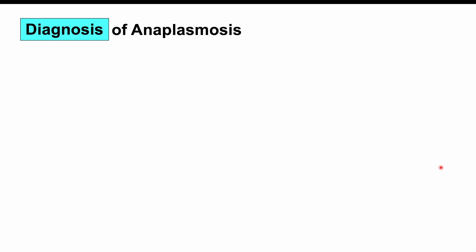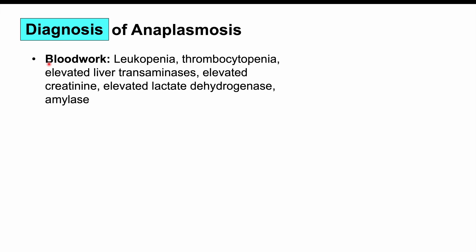For diagnosis, blood work typically shows leukopenia (low white blood cell count), thrombocytopenia (low platelet count), and elevated liver transaminases, which occur in roughly 70% of anaplasmosis patients. We can also see elevated creatinine, elevated lactate dehydrogenase, and elevated amylase. Elevated creatinine can indicate poor kidney functioning, while elevated lactate dehydrogenase can signal poor blood perfusion, as seen in shock patients.